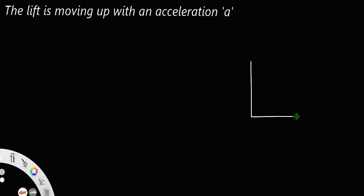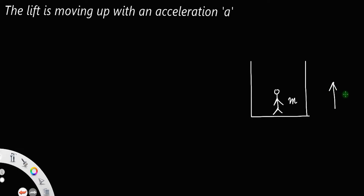Consider the motion of the lift in the upward direction — that is, the motion of the elevator in the upward direction. Let there be a person inside the lift, let m be the mass of the person. Here the lift is moving upward with an acceleration a.